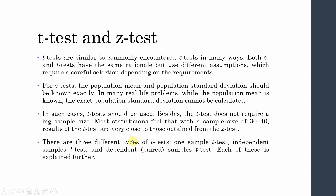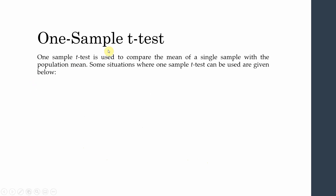There are three different types of t-tests: the one-sample t-test, the independent samples t-test, and the dependent paired samples t-test. The one-sample t-test is used to compare the mean of a single sample with the population mean.